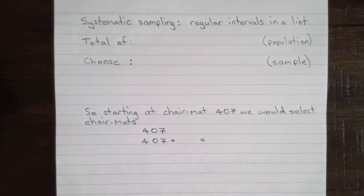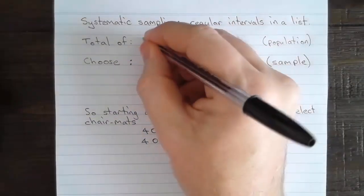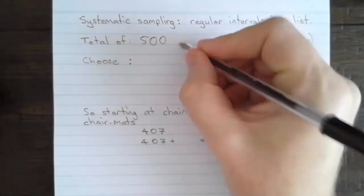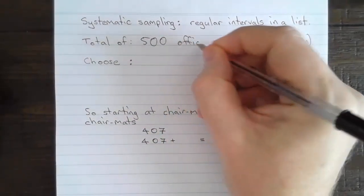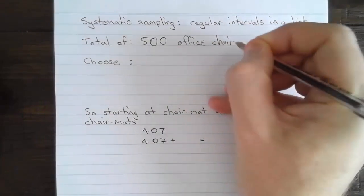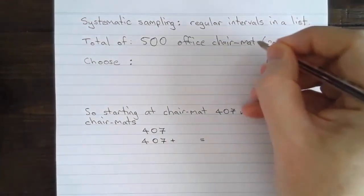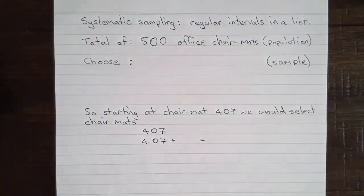Here we'd be talking about the population of 500 office chair mats. Let's just make a note of that. We've got a total of 500 office chair mats. That's our population that we're going to select the sample from. We're asked to use systematic sampling, so we need to select from those 500 at regular intervals.